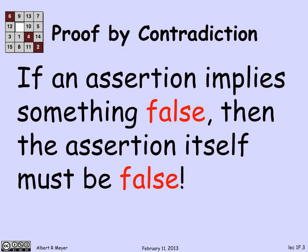If you're reasoning step by step, and at every step your reasoning is good — meaning if you had something true and reached a conclusion from it, the conclusion was also true — then if you start off with some assumption and keep proving things step by step in a way that preserves truth, and you arrive at something false, it's inevitable that what you started with must have been false, or else the thing you finished with would have been true.